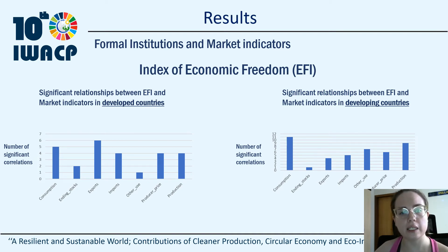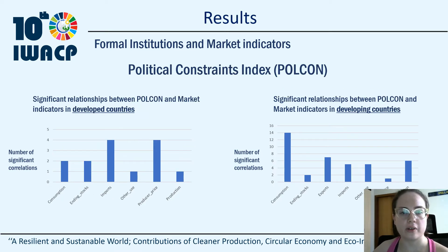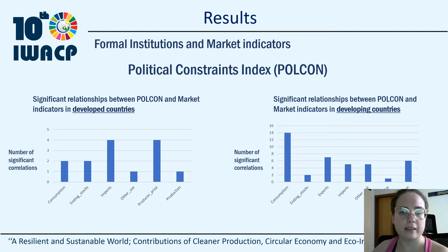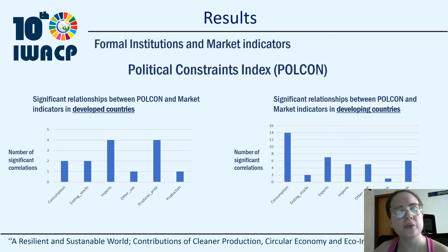Developed countries had more significant relations with the export market indicator, while developing countries had more relationships with the consumption index. The POCO indicator assesses how institutional and political factors constrain policy changes, and has two measurement units: POCO and POCO 5. Two correlations were made between the indicators and the market ones. In both comparisons, there were more significant relations with developing countries. The most significant relations for developed countries were with the producer price and import market indicators, while for developing nations, the indicator with the highest recurrence of significant relations was consumption, as we can see in these graphs.